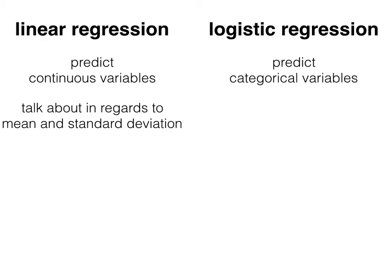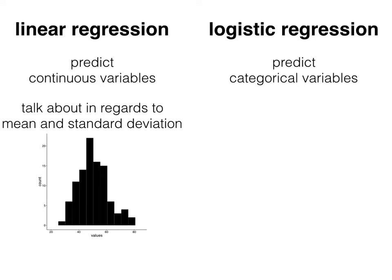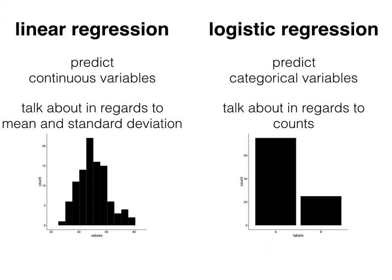Also, in linear regression, we talk about our data in regards to mean and standard deviation. As a result, we'll often build histograms to see what the spread of our data looks like. For logistic regression, though, we talk about our data in regards to counts, so a bar plot may be a more appropriate representation of the data.